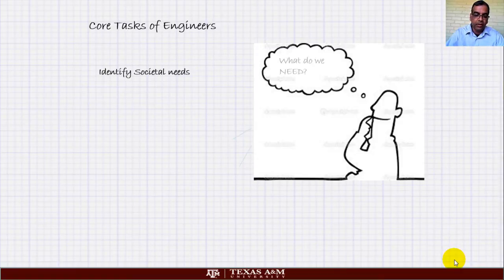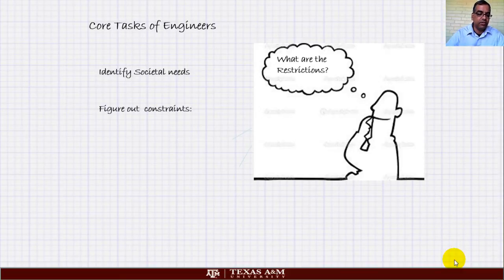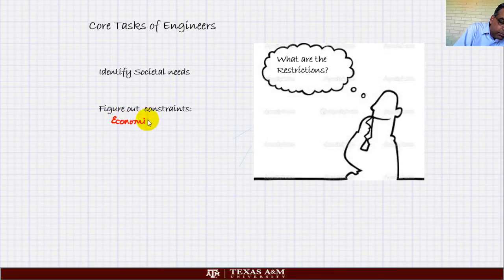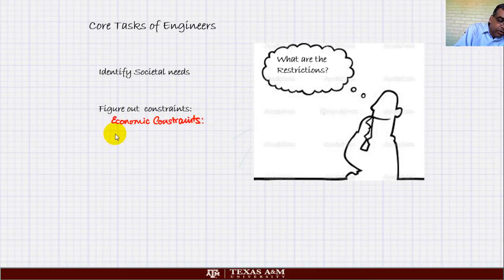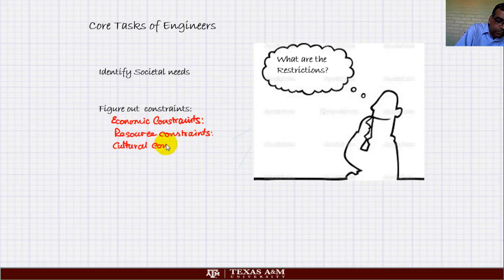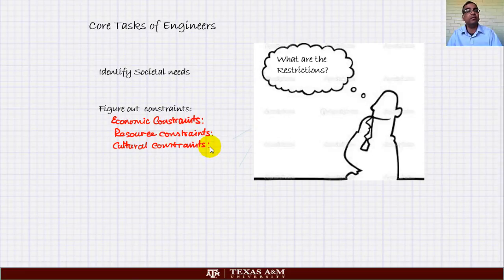The next question is what are the restrictions? Figure out the constraints on this. For example, the constraints could be economic constraints, which means how much money you have. Then it could be resource constraints, or it could be cultural constraints. Any of these things. I want you to understand that this is something that you have to account for as an engineer.